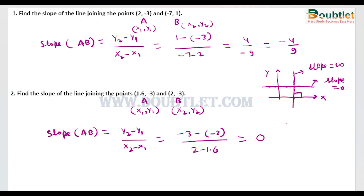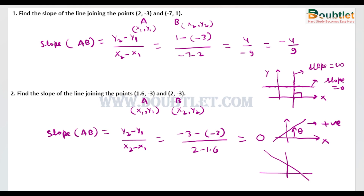If a line makes an acute angle with the positive direction of the x-axis, then the slope is positive. And if a line makes an obtuse angle with the positive direction of the x-axis, then the slope will be negative. This line makes an obtuse angle, and this line is parallel to the x-axis. This is how we can draw the relations between the slopes of lines.